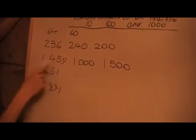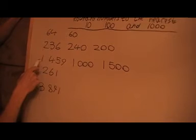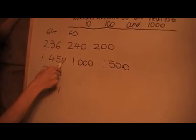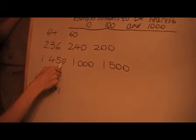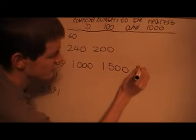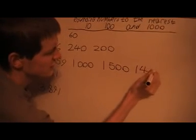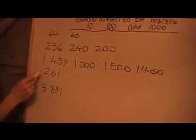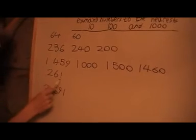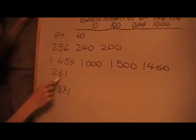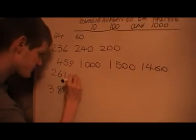Now to round 1459 to the nearest ten, look at the units digit, which is a nine, so round it up to 1460.